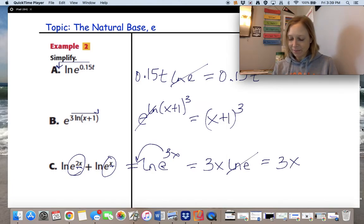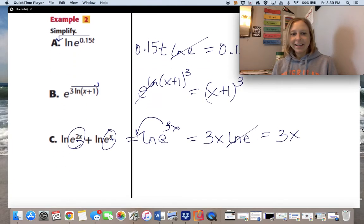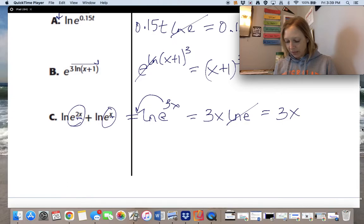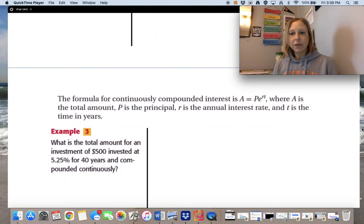All right. We're going to do one more problem together and then wrap things up for our videos this week. We're going to do one problem together that uses compound interest formula, a continuously compounded interest. The formula is A equals Pe^rt. Sometimes we say PERT.